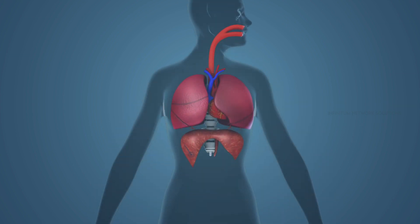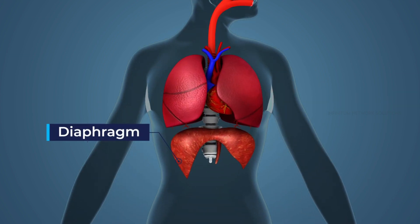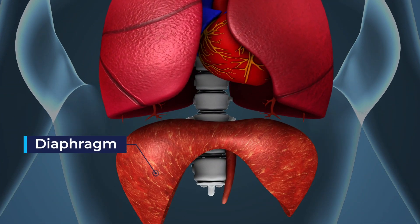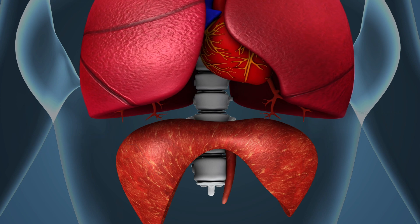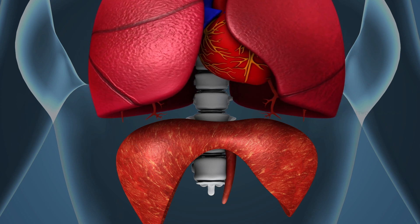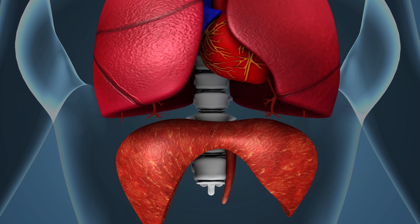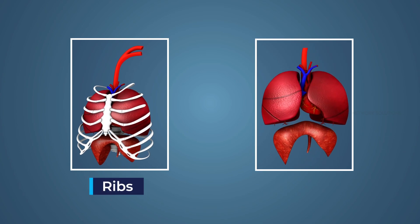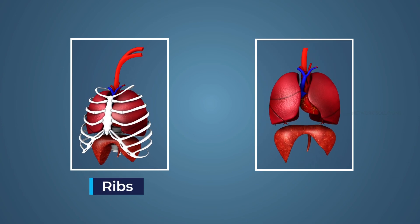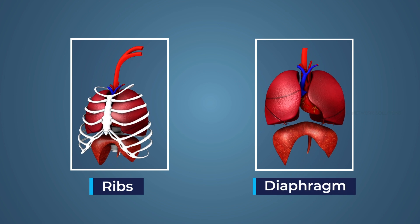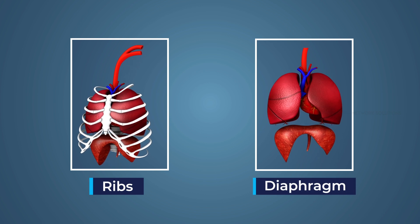In females, the diaphragm does not take part in inspiration to prevent injury to the fetus if the woman is pregnant. Therefore, the ribs play an important role in female inspiration, whereas the diaphragm does so in the male.